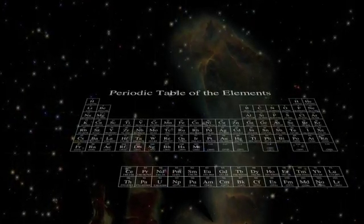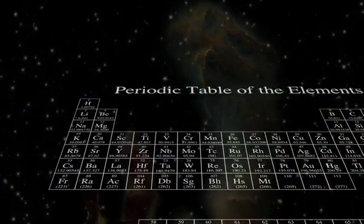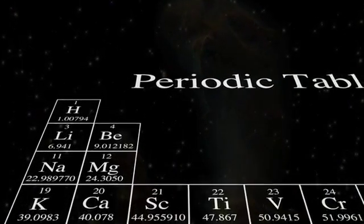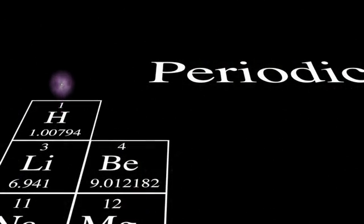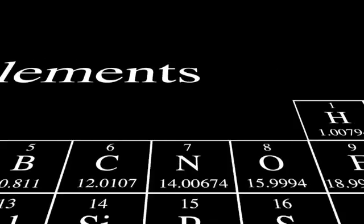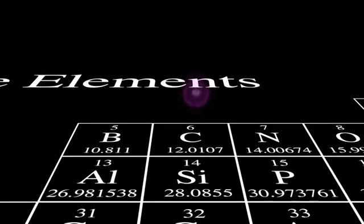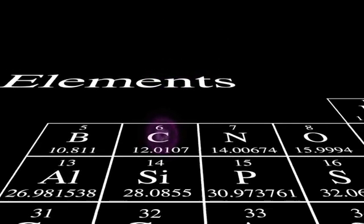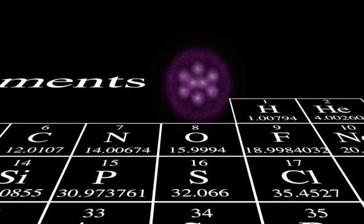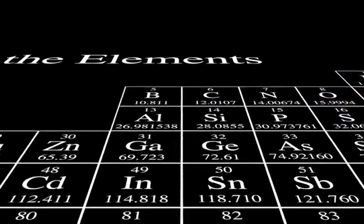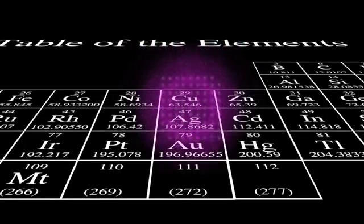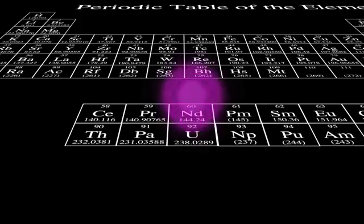The Periodic Table is a list of all the atoms in the universe that have different numbers of electrons. Hydrogen has one electron, helium has two, carbon has six, oxygen eight, gold has 79, and uranium has 92.